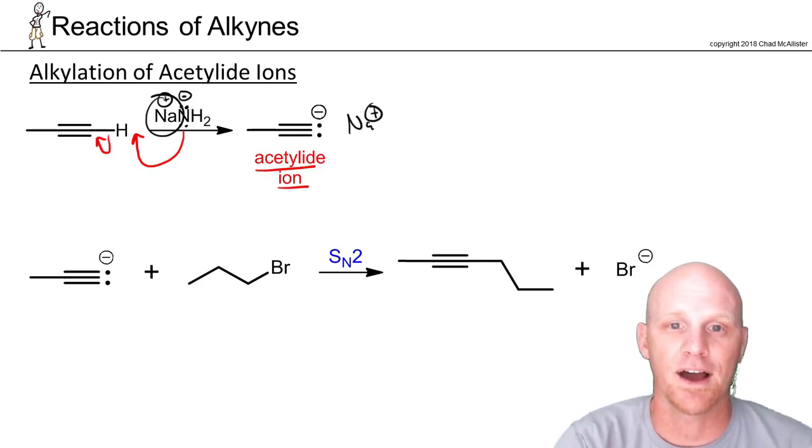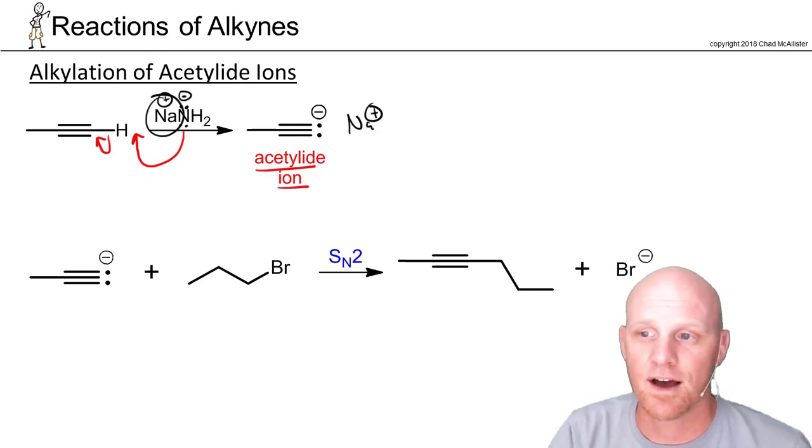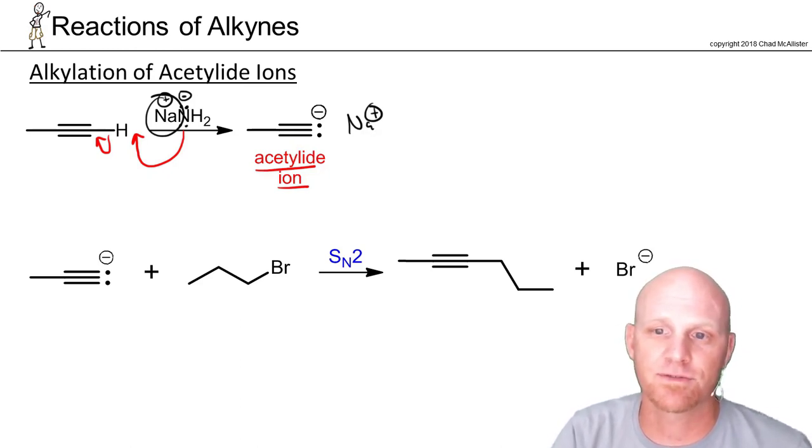But this acetylide ion, and I'm calling it an acetylide ion, not the acetylide ion, as long as you've got a conjugate base of a terminal alkyne, we can call it an acetylide ion regardless of how long the chain is.